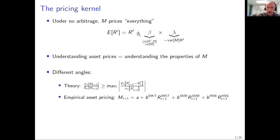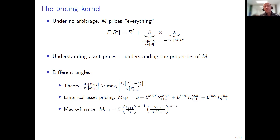If you work in macro finance, the way to understand the pricing kernel is to write down a structural model and relate it to properties of investors' risk preferences and macroeconomic risks. In this case, the pricing kernel is a function maybe of consumption growth, and if you believe in Epstein-Zinn preferences, then perhaps there are other economic state variables like long-run risks or time-varying disaster probabilities that enter.